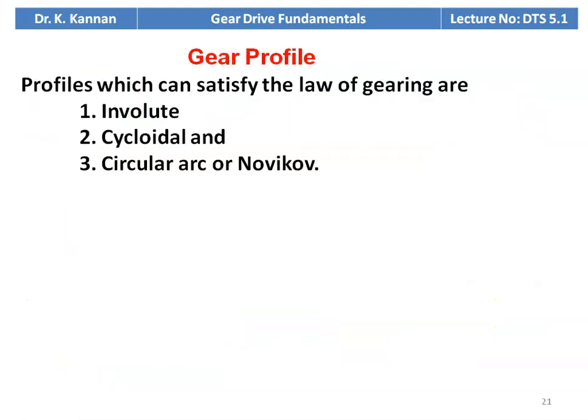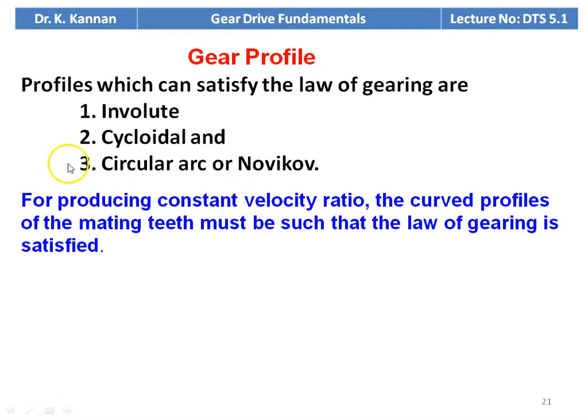There are three different types of gear profiles that can satisfy the law of gearing: involute, cycloidal, and circular arc (Novikov profile). The majority of our design discussion will be on the involute profile — we will not be designing with cycloidal or circular arc profiles. In the four gear types — spur, helical, bevel, and worm — we will consider only the involute profile. For producing constant velocity ratio, the curved profiles of the mating teeth must satisfy the law of gearing so that angular velocity remains constant throughout the transmission.